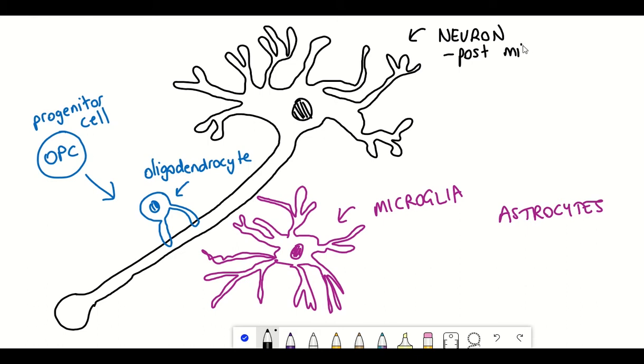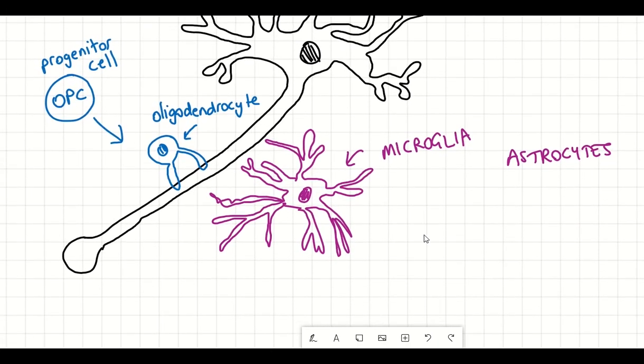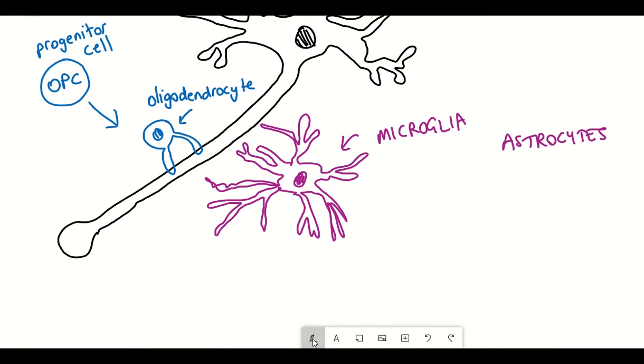The progenitor cells are the major proliferative cells found within the brain whereas the neurons themselves are generally post-mitotic so they don't divide. The microglia are considered more immune cells of the brain and play a key role in pruning and managing the neurons.